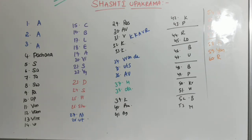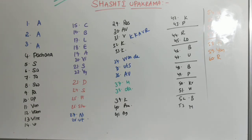The next set is Kshara. In that, Kshara Pratisarana is the fortieth one. The forty-first one is Agni Karma. This completes totally forty-one kinds of treatment principles among this Shashti Upakrama.